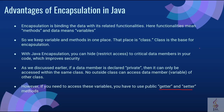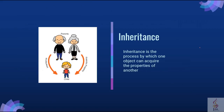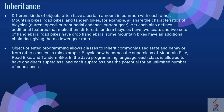Now let's go to our next object oriented programming concept: inheritance. Inheritance is the process by which one object can acquire the properties of another. As you can see in this picture, the child inherits the properties of the parent. Different kinds of objects often have a certain amount in common with each other. For example, mountain bikes, road bikes and tandem bikes all share the characteristics of a bicycle, like current speed and current gear.